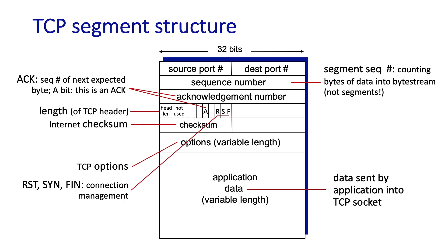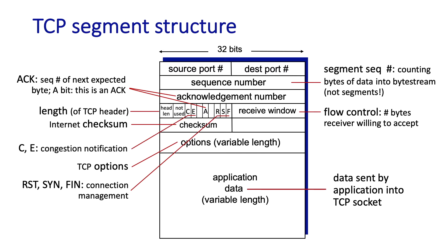The reset, SYN, and FIN bits are used for connection management — we'll study that shortly. There's a field in the header used for flow control, where the receiver can tell the sender the number of bytes it's willing to accept. There are two bits used for congestion notification, and finally there are two bits in the urgent field which are not really used in practice.